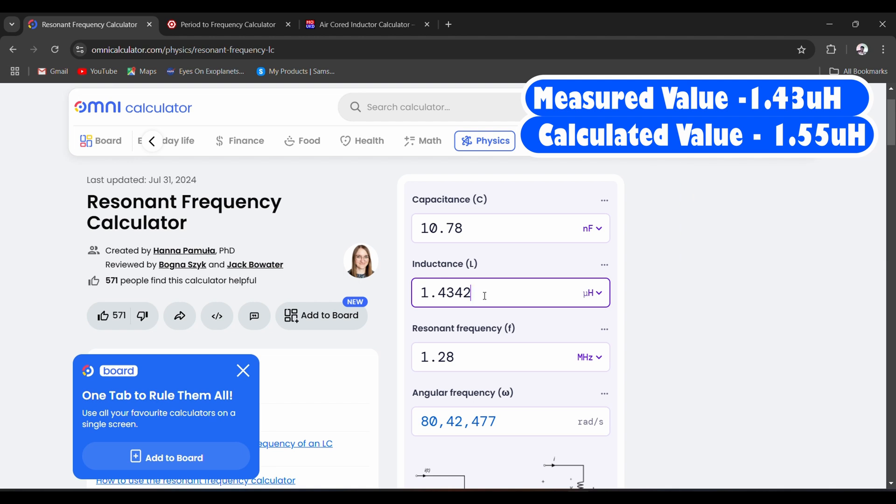it was 1.4342. It's very close now, you can see. So in this way, you can actually measure or guess the value of the inductors with good precision at least. I mean, it's okay for our use case for audio.